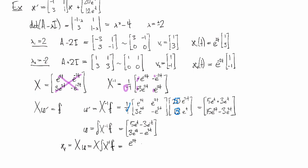I multiply by X, which was e to the 2t, e to the minus 2t, 3e to the 2t, minus e to the minus 2t, and then multiply that by the u we just found on the previous step.